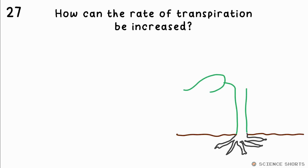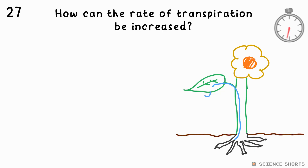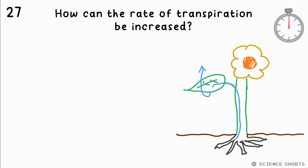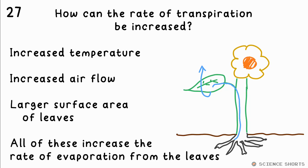Question 27. What three factors will increase the rate of transpiration? Increasing the temperature, increasing the airflow — that's decreasing the concentration of water around the leaves — and increasing the surface area of the leaves all increase the rate of evaporation of water from the leaves, therefore increasing the rate of transpiration.